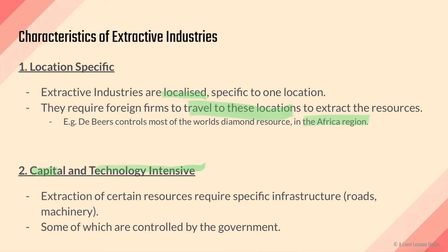They require specific infrastructure such as roads and machinery, and some of these are controlled by the government, so government regulation can come into play. For example, the construction of roads tends to be controlled by the government. So one key characteristic of extractive industries is that they require a lot of machinery and technology to actually extract a given resource.